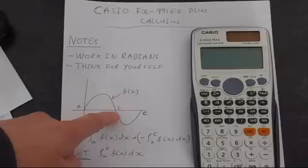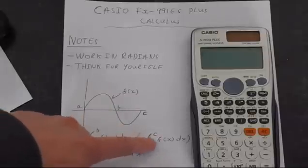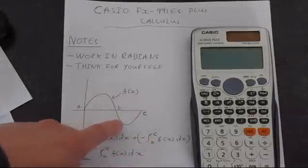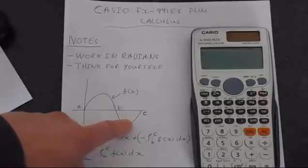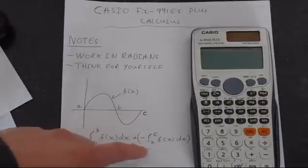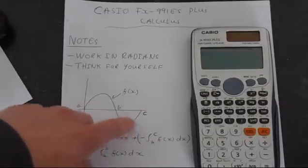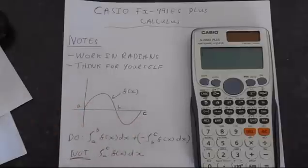So you're doing a to b, and then adding the negative of b to c. b to c will be negative, so putting a negative in front here makes it positive. So you've got to get this area plus this area as if it was positive, and that will give you the right answer.